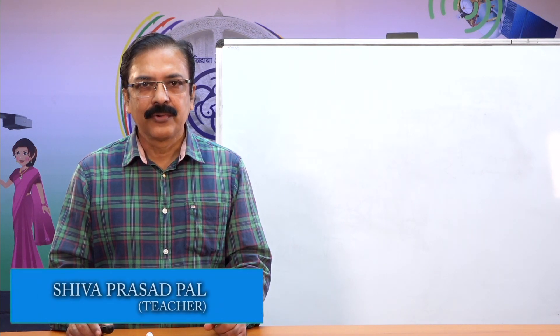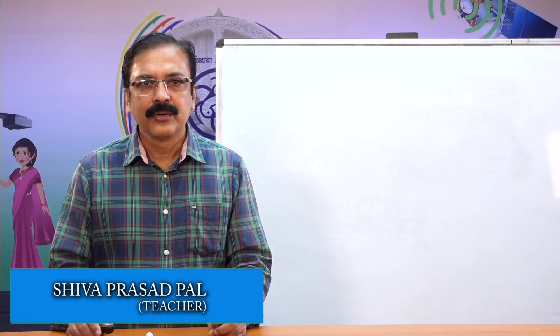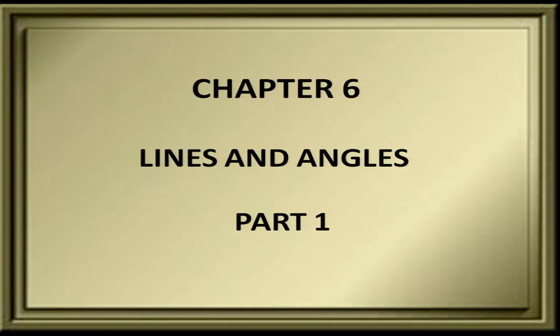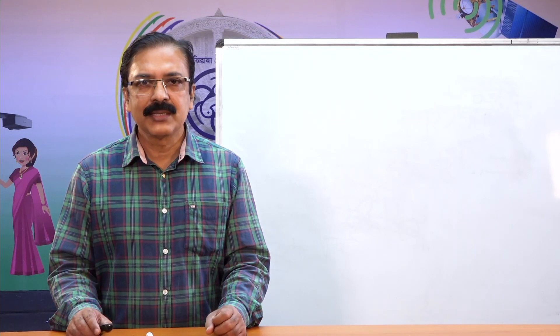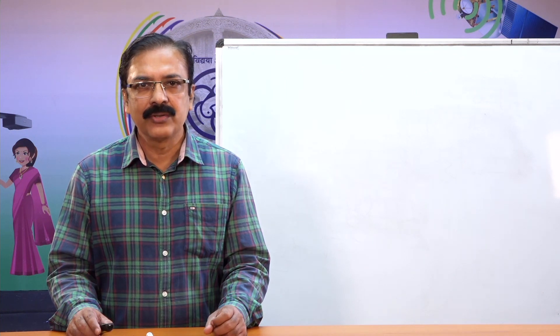Dear students, today we are going to discuss from Class 9 Mathematics book, Chapter 6, that is Lines and Angles, Part 1. Dear students, have a look around you. You can see many objects like walls, doors, windows, tables, and almirah.